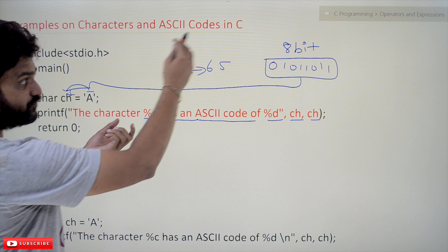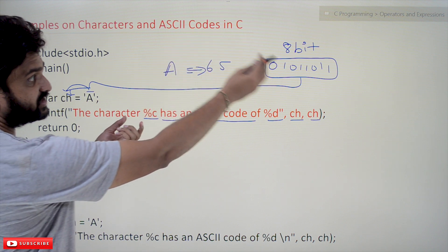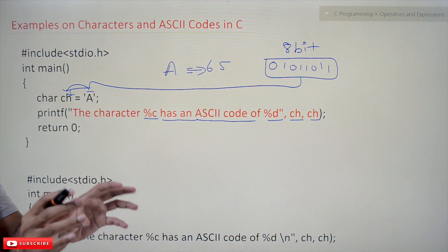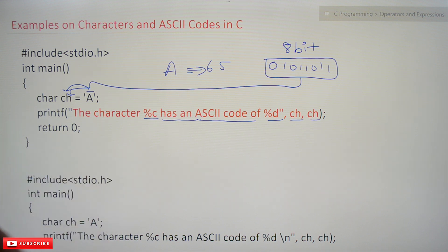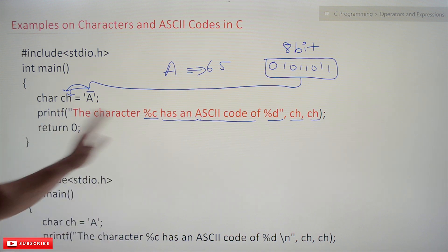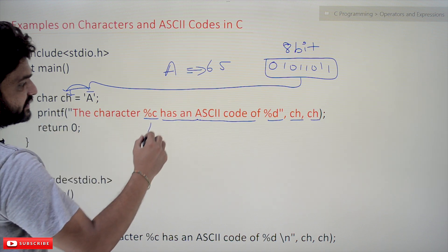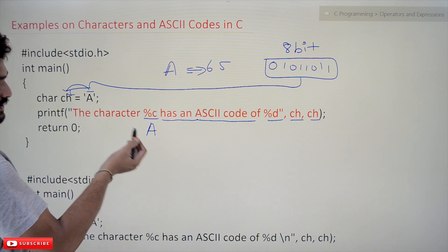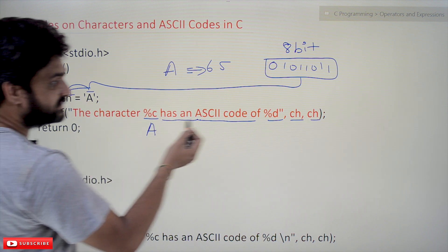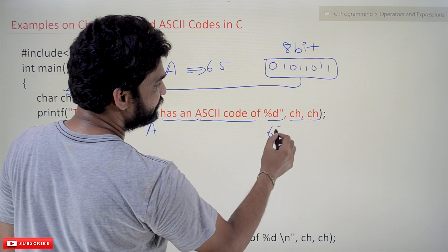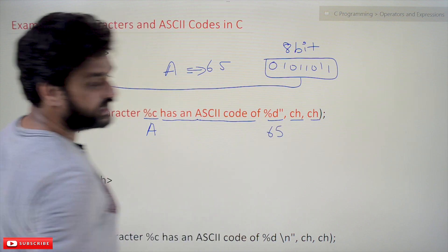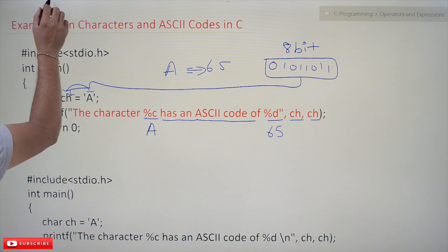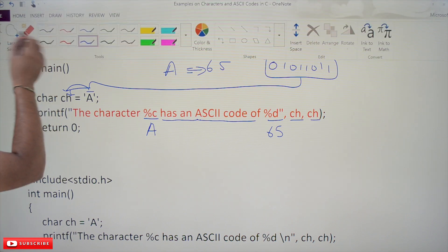We are going to take the same code and find the corresponding character for this ASCII code, and it will get printed. You have to understand that point. What will get printed is: 'character %c means A has an ASCII code of 65' — this will get printed.